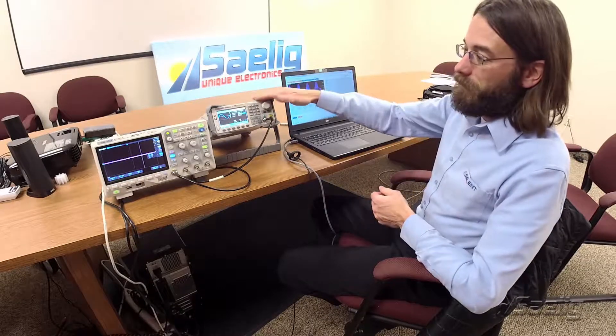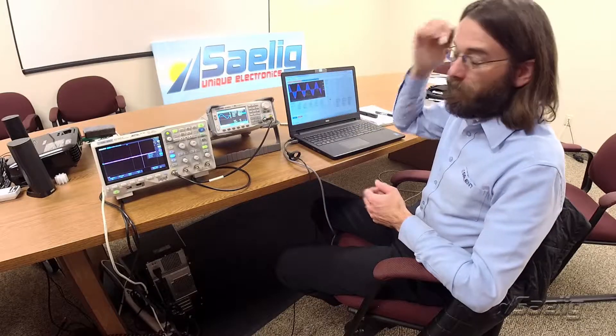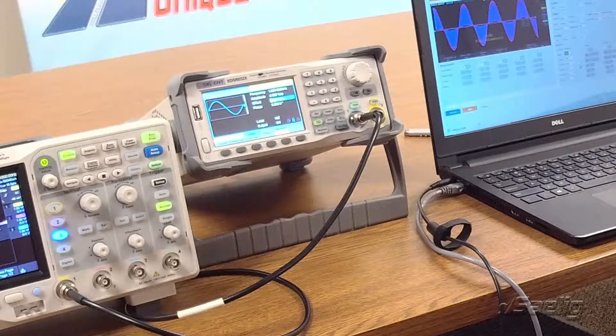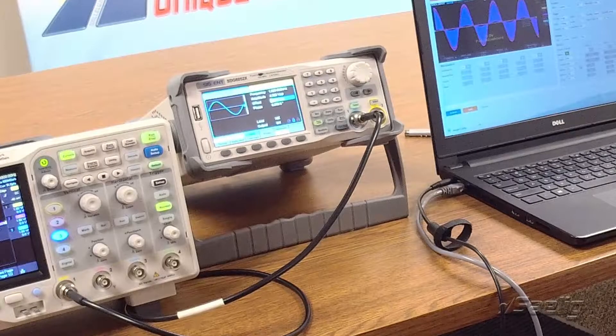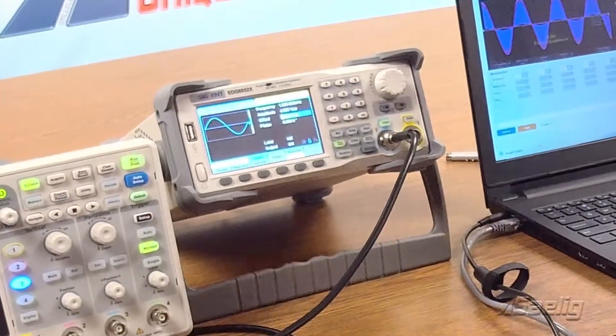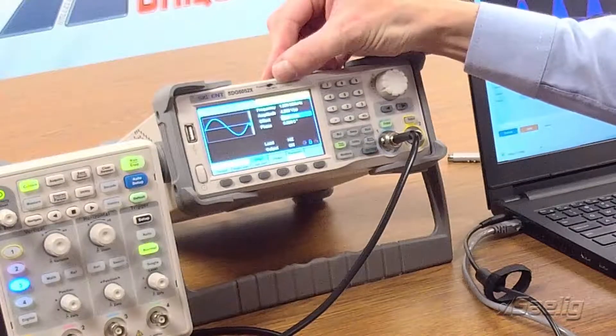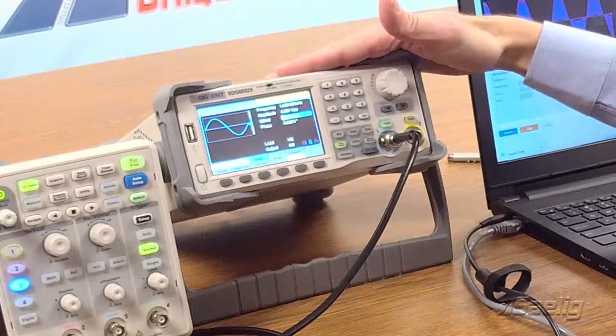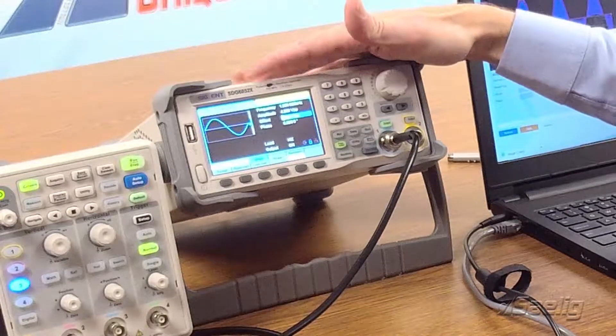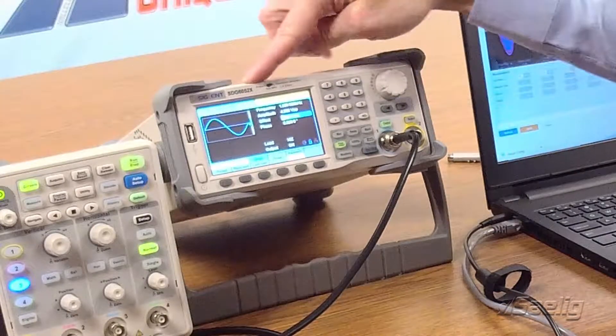The SDG 6000 is a departure for Siglent. We're actually increasing our bandwidths. This is available in output frequencies of 200, 350, and 500 megahertz with an output sample rate of 2.4 gigasamples per second. In this case, we've got the SDG 6052, which is the 500 megahertz two-channel version.